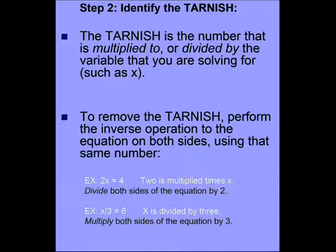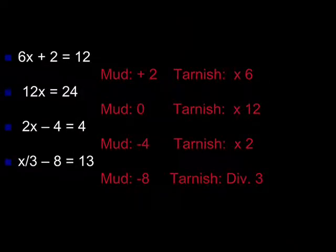Now, we'll look at some other equations. 6x plus 2 equals 12. What would be the mud? 2 is added to 6x, so it's the mud. To get rid of it, you'd subtract 2 from both sides. The tarnish is 6, and it's multiplied by the x. So, to get rid of it, you'd divide both sides of the equation by 6.